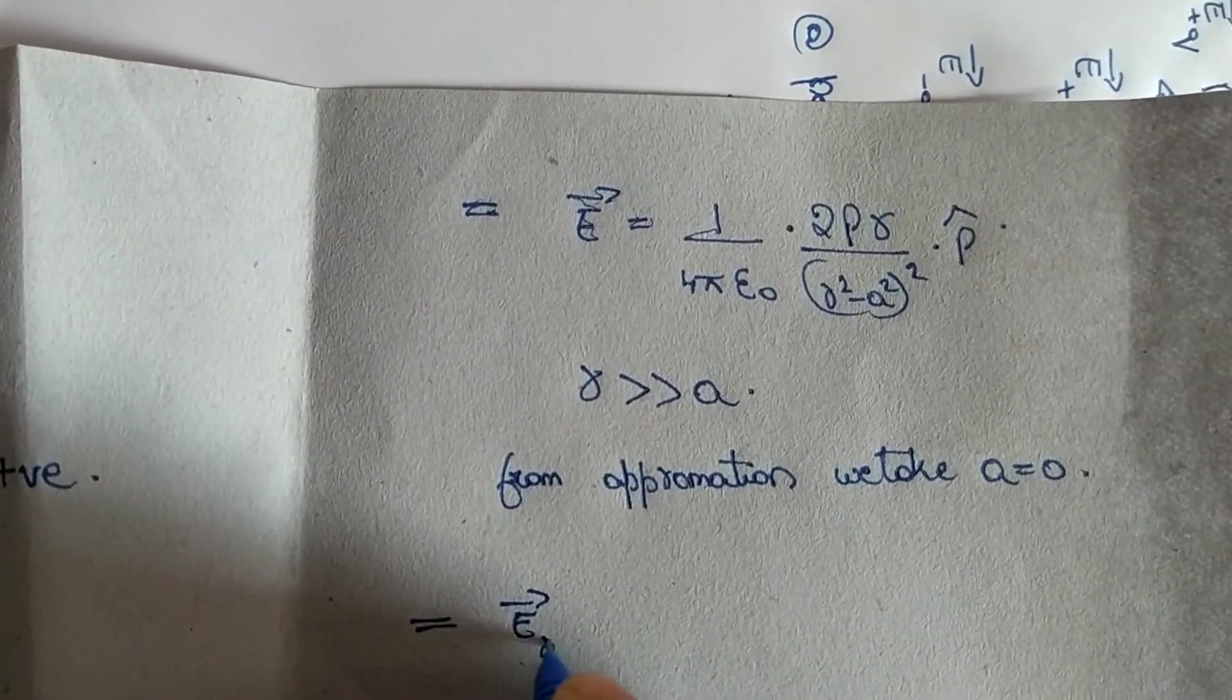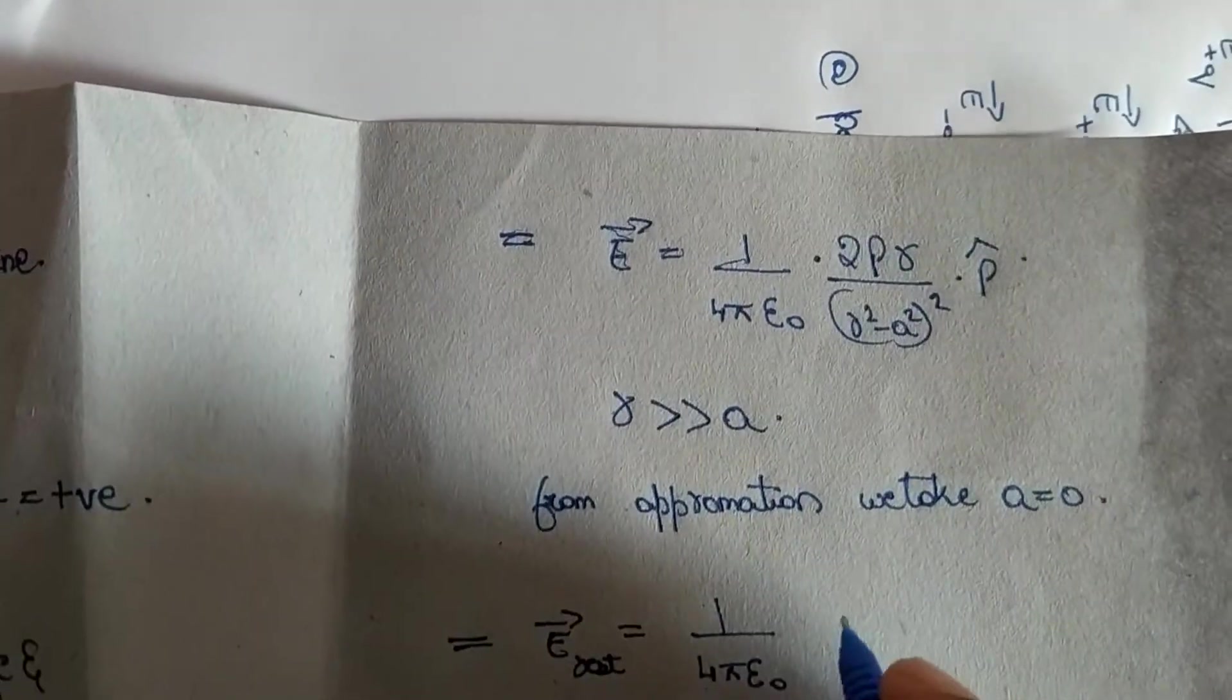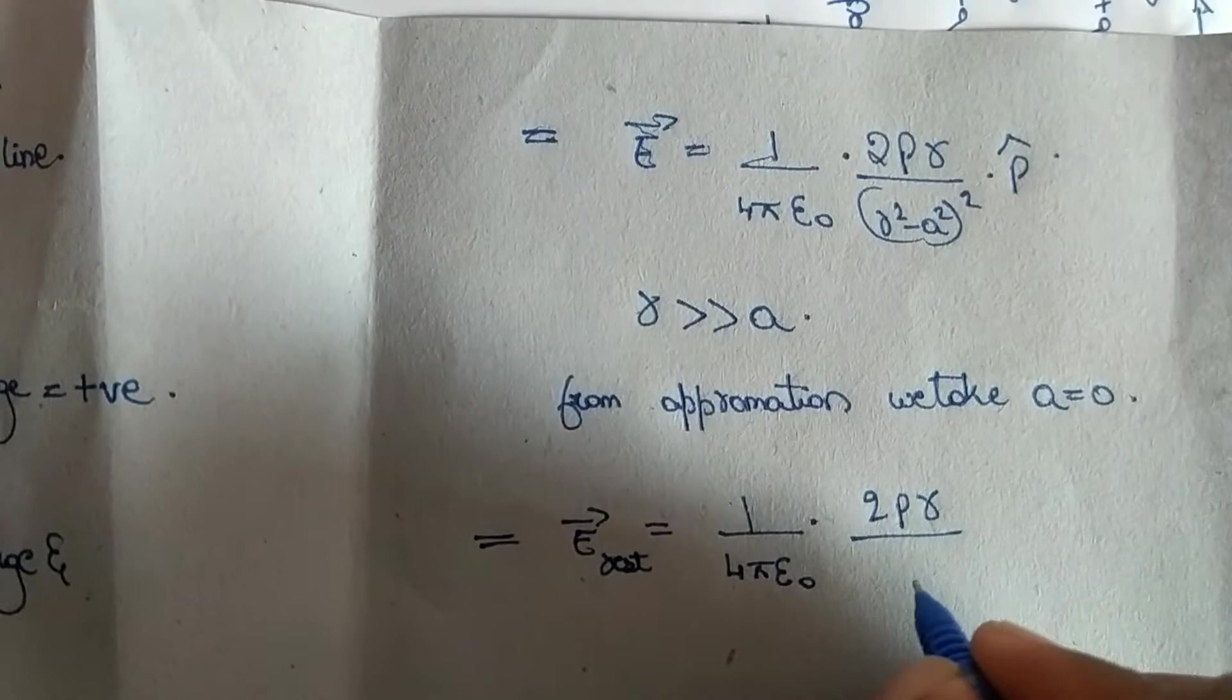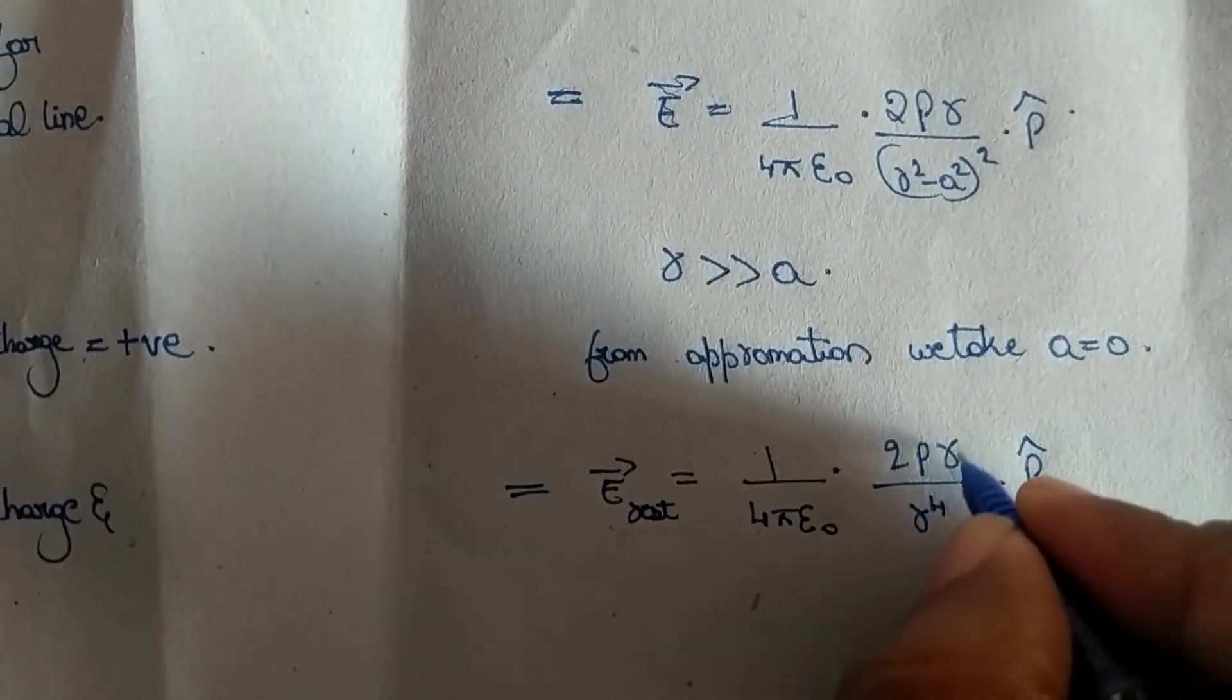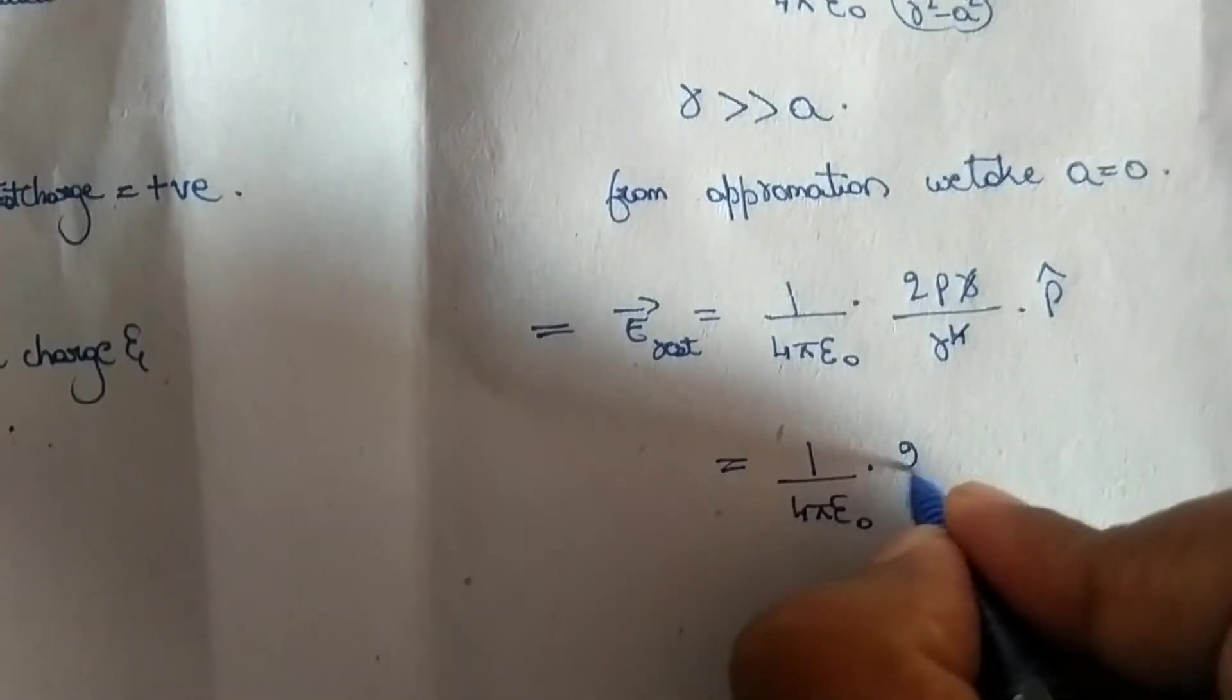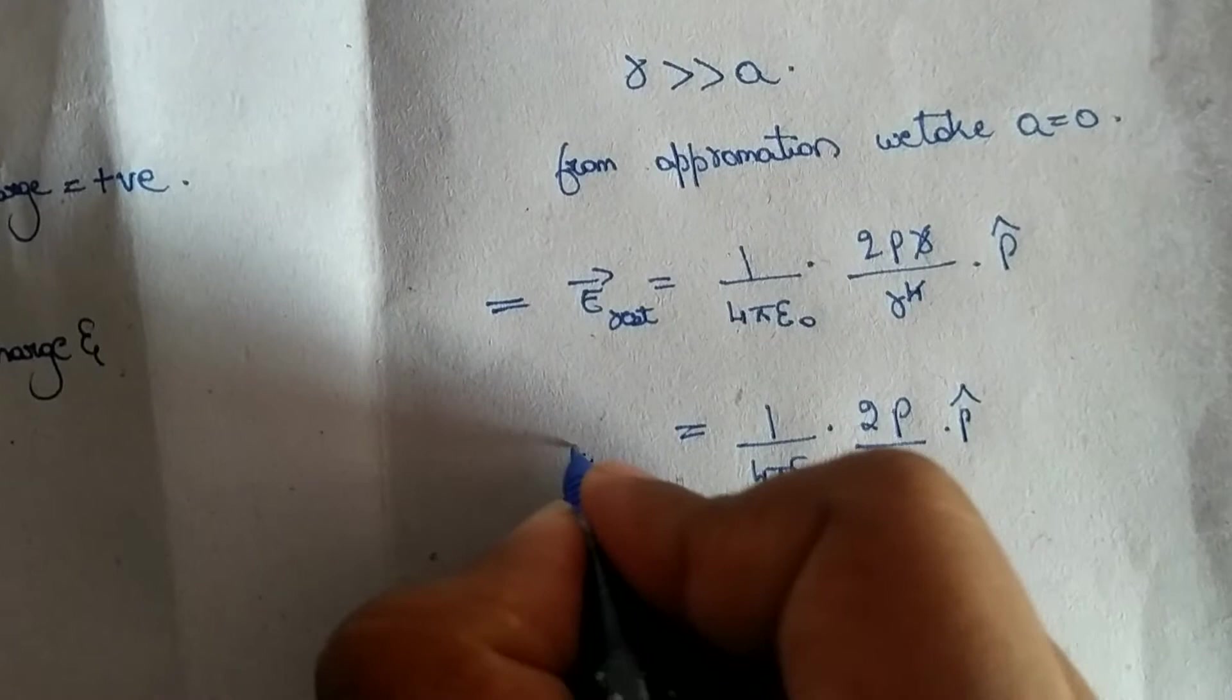So E is given by 1 by 4 pi epsilon 0, 2p divided by r cubed. R cancels each other. 1 by 4 pi epsilon 0, 2p divided by r cube into p cap.